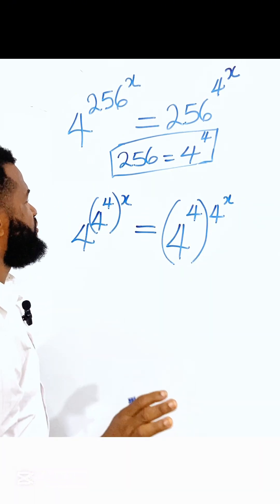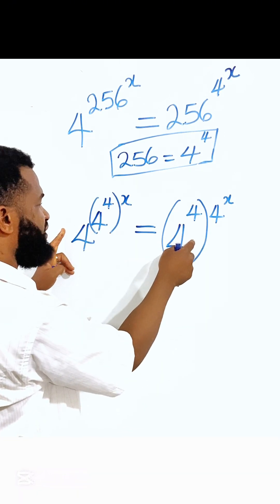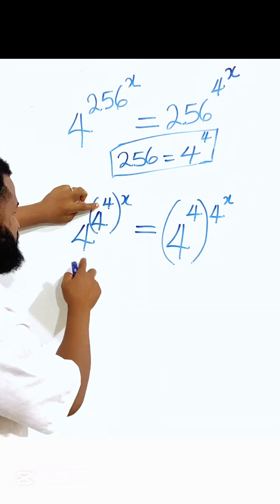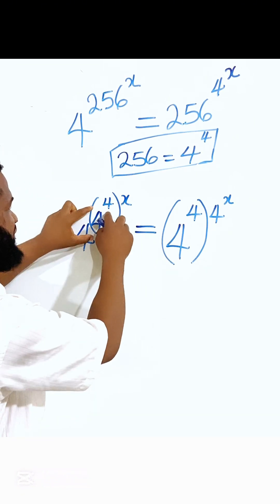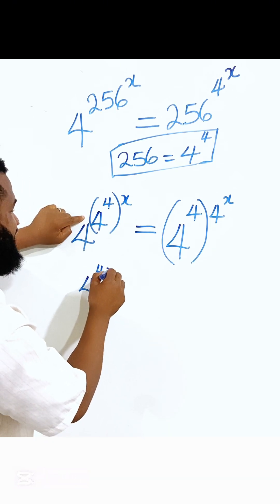So now let me do this. This is 4 and this is 4, right? Let me take the base. Since they are the same base, I'm taking the power. The power for this 4 is 4 raised to power 4x.